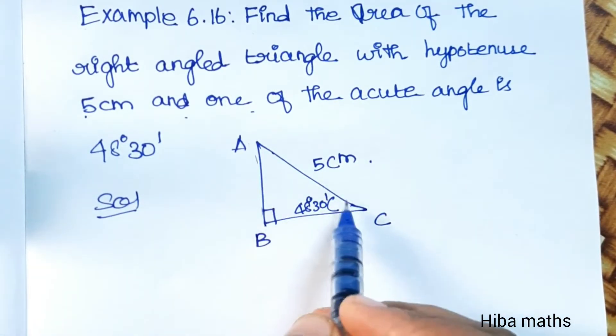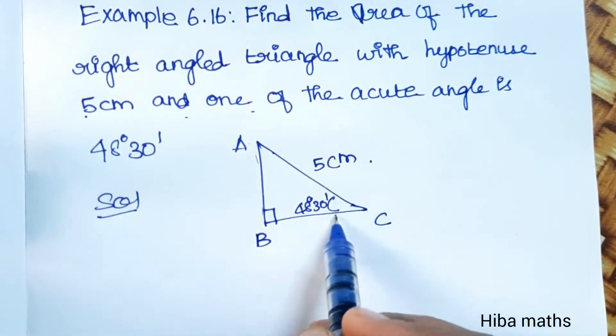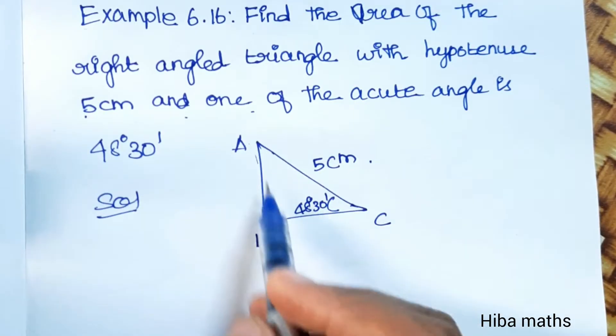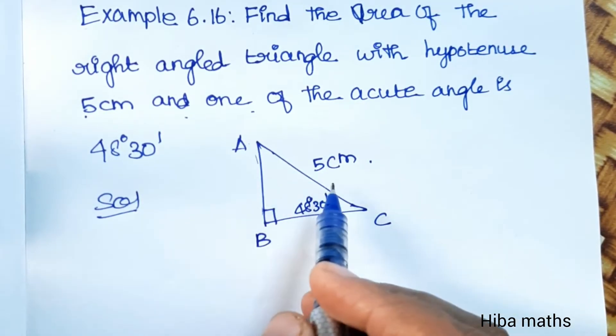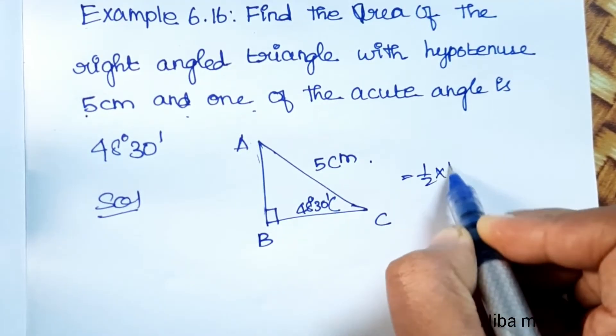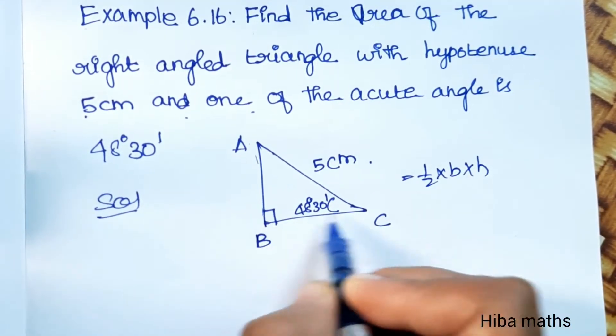In a right-angled triangle, we have the hypotenuse value and angle value. The area of a right-angled triangle is half into base into height.